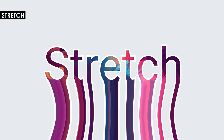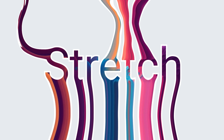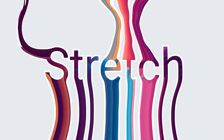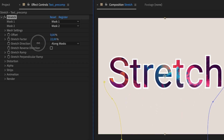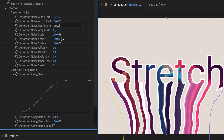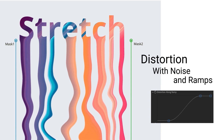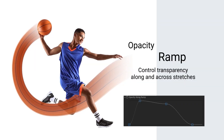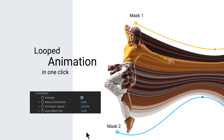Stretch is an After Effects plugin that allows you to stretch pixels along curved paths made with two mask shapes. You can stretch images along or across masks. There are a ton of parameters to control the distortion, randomize with a parameter called strips, and preview your stretch in wireframe mesh mode. You can fine-tune the transparency along the stretches via opacity ramps, and even quickly create a seamless looping animation via a single click.